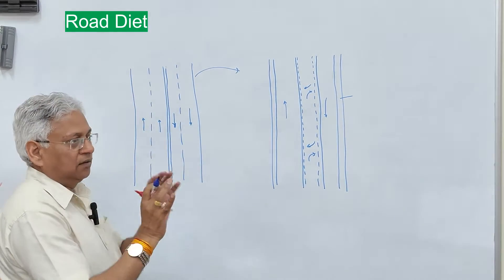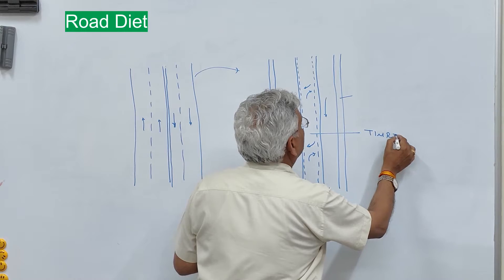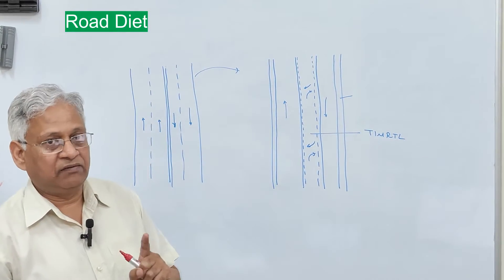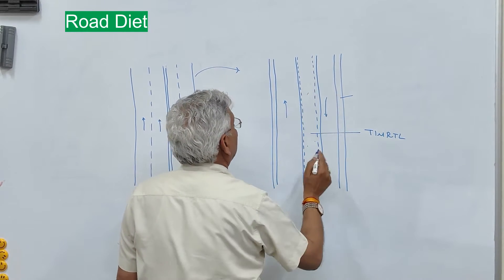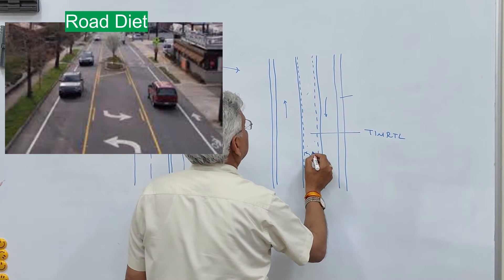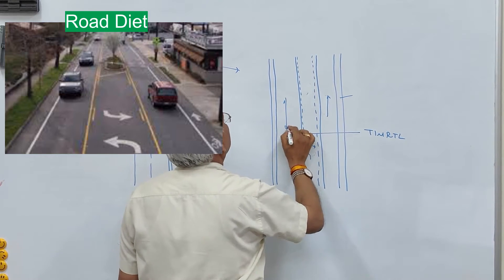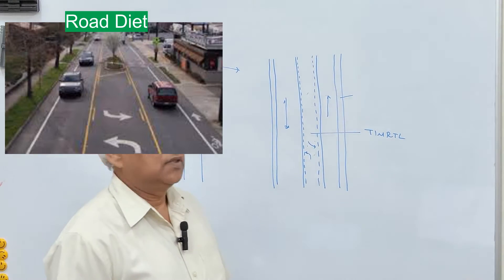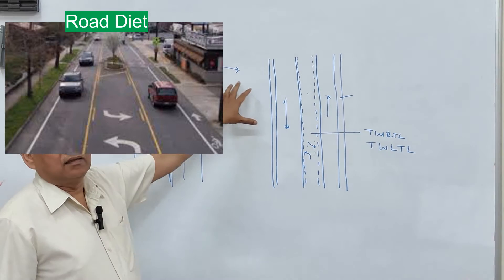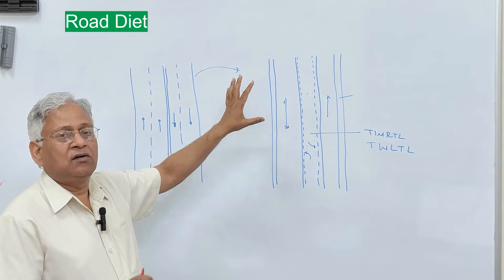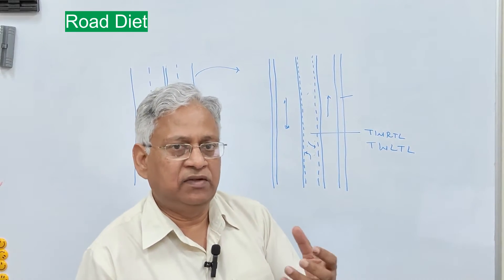This central lane is called the two-way right turn lane for left-hand drive conditions, and the two-way left turn lane for right-hand drive conditions, where the markings will differ accordingly. This is the basic concept, but road diet is not limited to this configuration — it can take several other forms, which I will explain a little later.